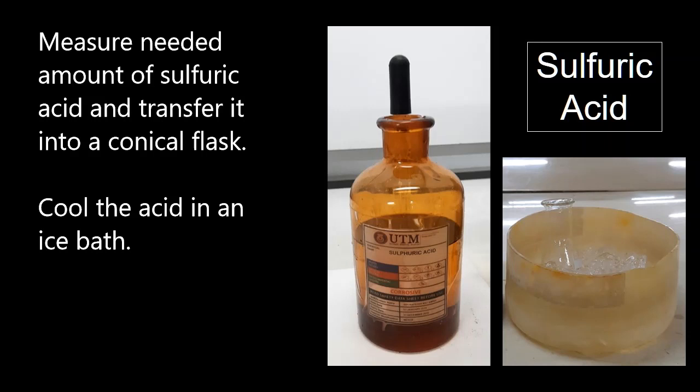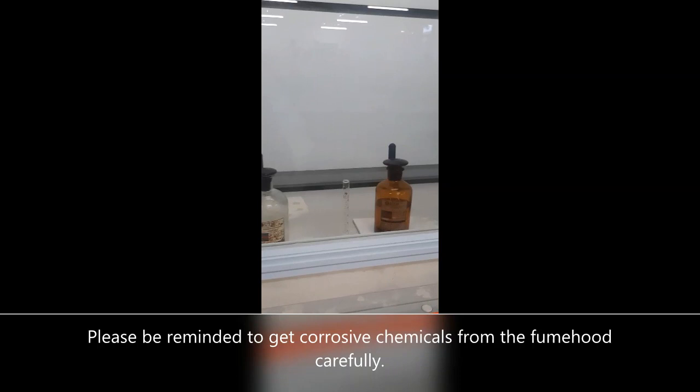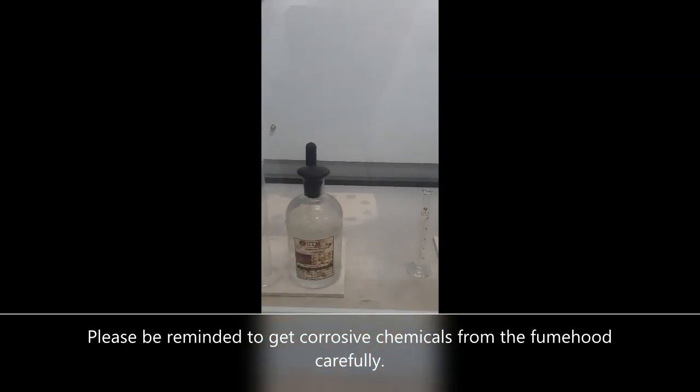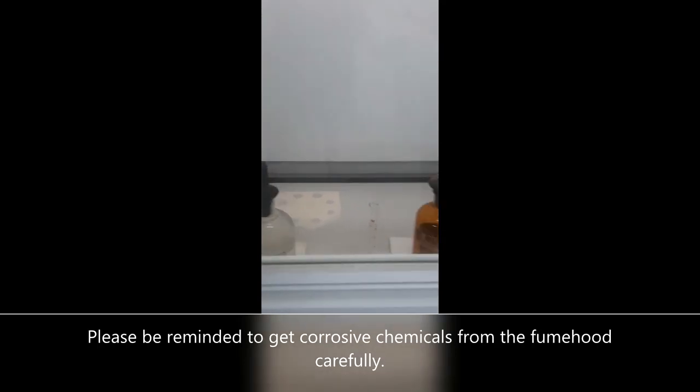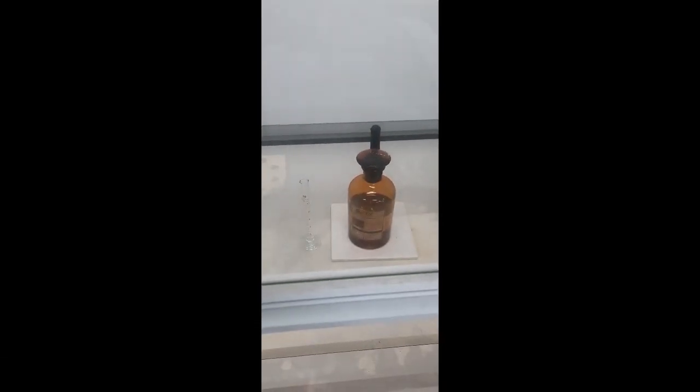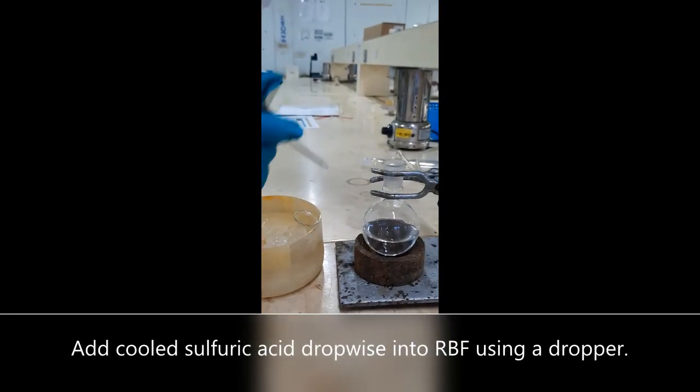Measure sulfuric acid in a volumetric cylinder and pour into a conical flask. Cool the acid in an ice bath. All corrosive chemicals are found in the fume hood. Carefully measure the needed chemicals using volumetric cylinder.